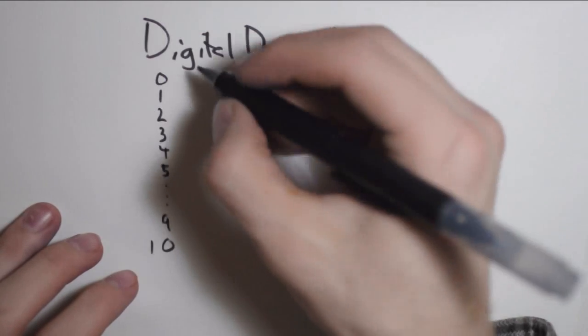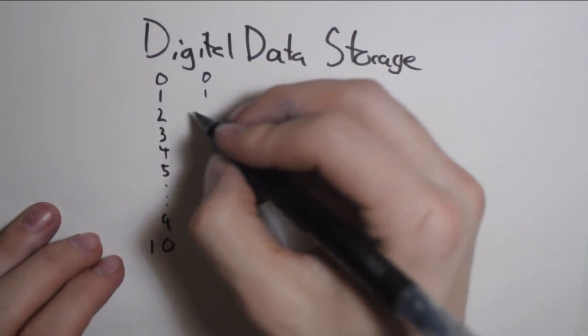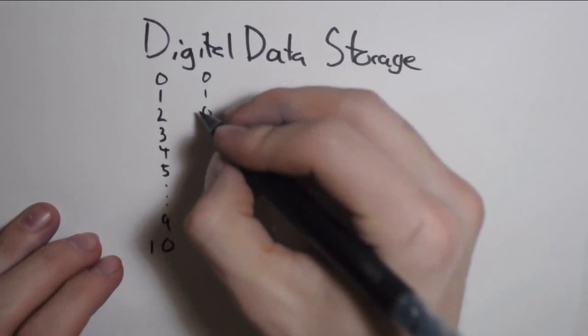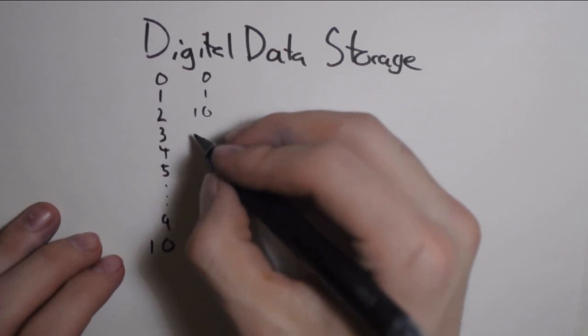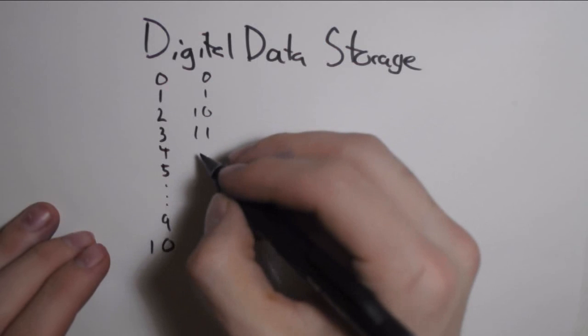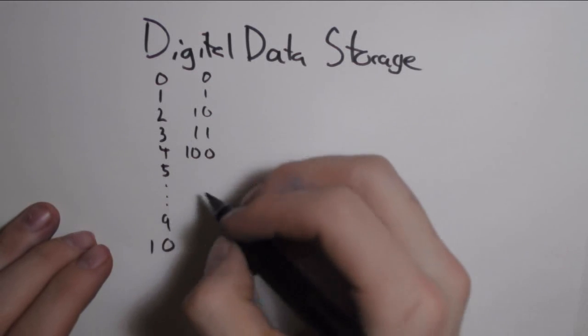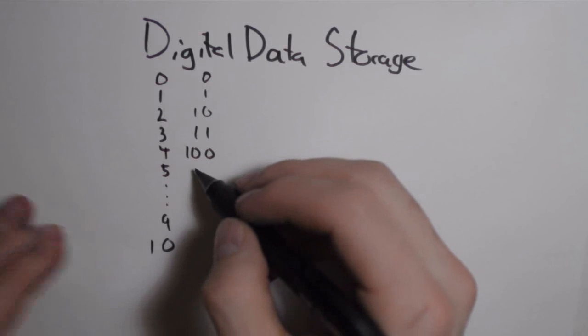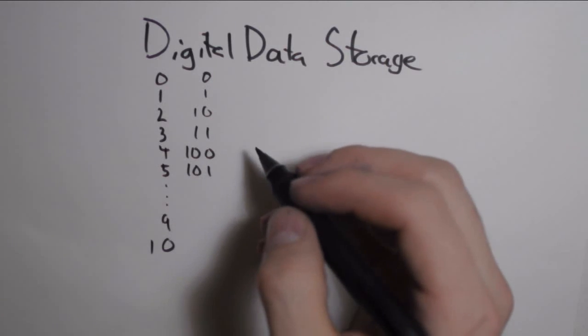Binary is exactly the same way except you only have two digits, so you go from 0 to 1 and you can't do 2 because there is no 2, so then you do the whole 10 shenanigan. And then 3 is 11, 4 is 100 because you can't increase either of those. 5 is 101 technically.